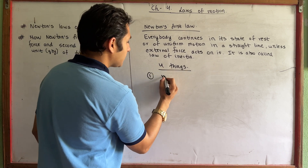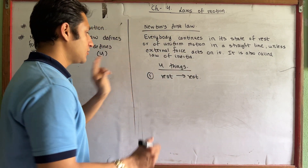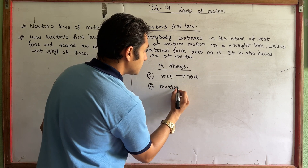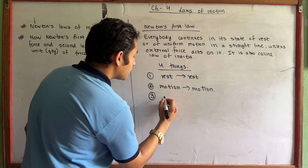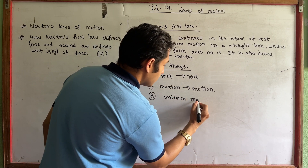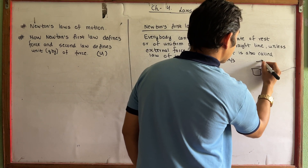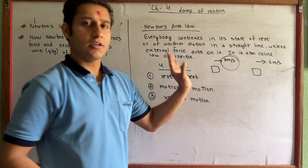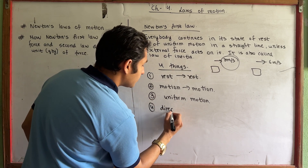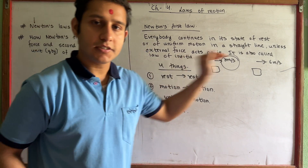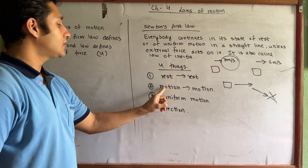Let me explain the components. Number one: if a body is at rest, it continues to be at rest. Number two: if a body is moving, it continues moving. Number three: the motion is uniform — if your body is moving at 3 meters per second, it continues at that speed, not 6 meters per second. Number four: direction — if a body is moving in a straight line, it continues in that direction.